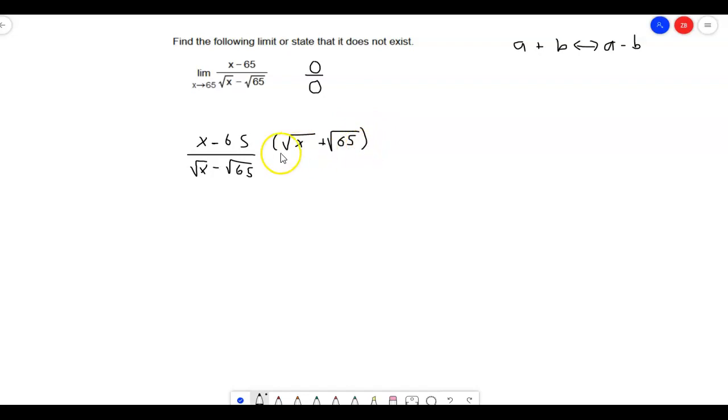And then we have to multiply the bottom by the same thing, the square root of x plus the square root of 65. And that's going to equal, on the top, I'm going to keep this factored.